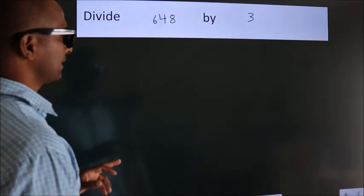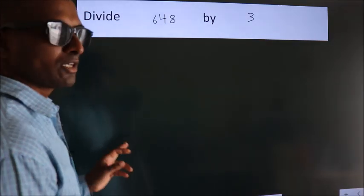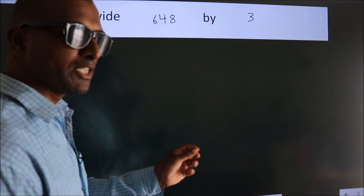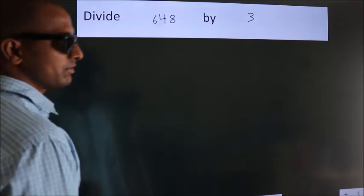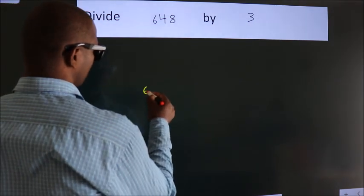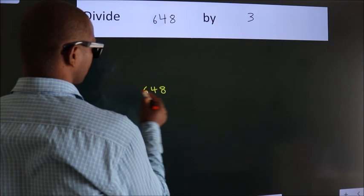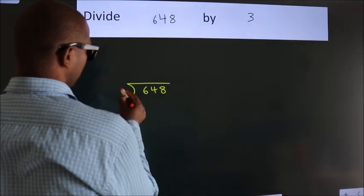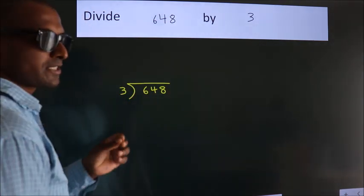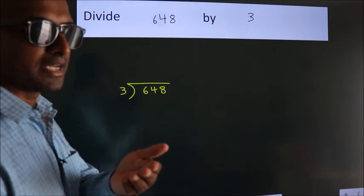Divide 648 by 3. To do this division, we should frame it in this way: 648 here, 3 here. This is your step 1. Next,